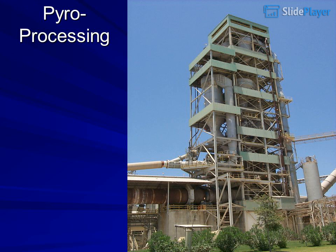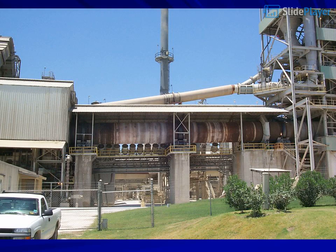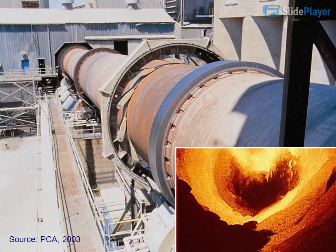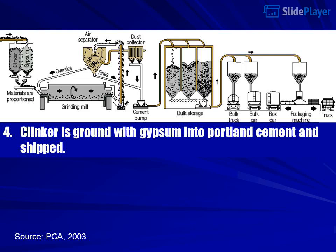Modern state-of-the-art preheater/precalciner system with downdraft calciner — kiln capacity around 2,000 TPD, 12 × 165 feet, 3.1 RPM. Source: PCA 2003, Figure 2-8, rotary kiln furnace for manufacturing Portland cement clinker — inset view inside the kiln. Step 4: Clinker is ground with gypsum into Portland cement and shipped.